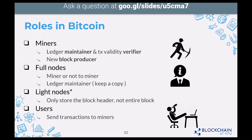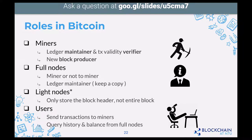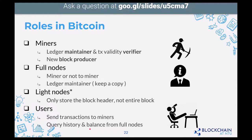The fourth role is users — most people in the network. They don't maintain full history; they just connect to the network, identify a few full nodes or miners, sign and broadcast their transactions, and tell miners to put it in the next block. When a user wants to know their balance, they query the full node, which has the entire history.